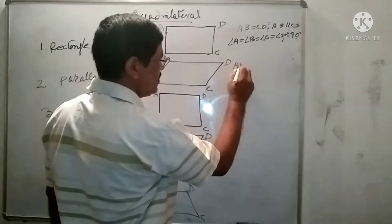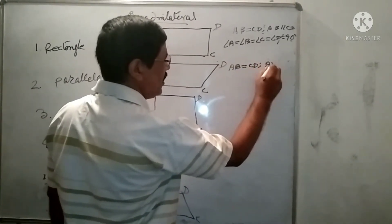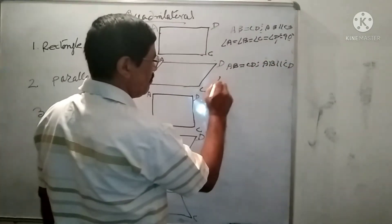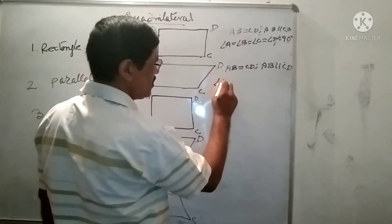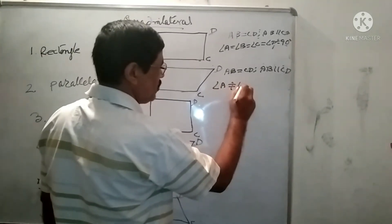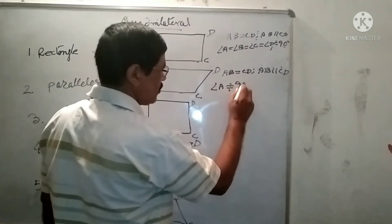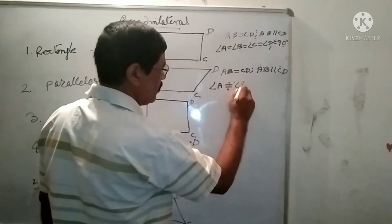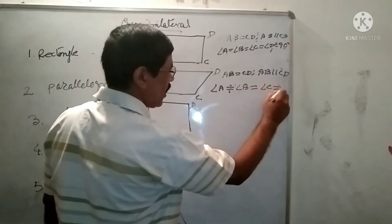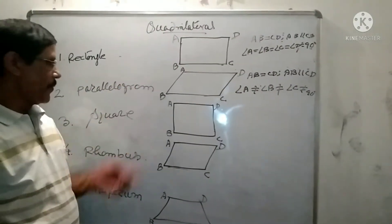So ABCD is a parallelogram. Here AB equals CD and AB is parallel to CD, but all four angles are not equal to 90 degrees. Only the opposite angles are equal to each other.